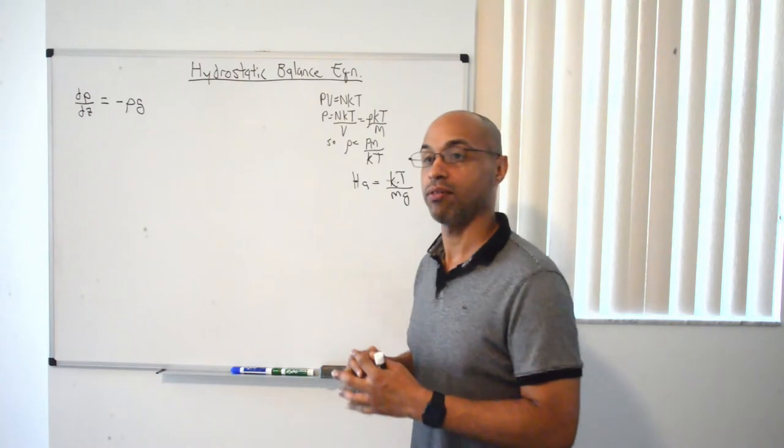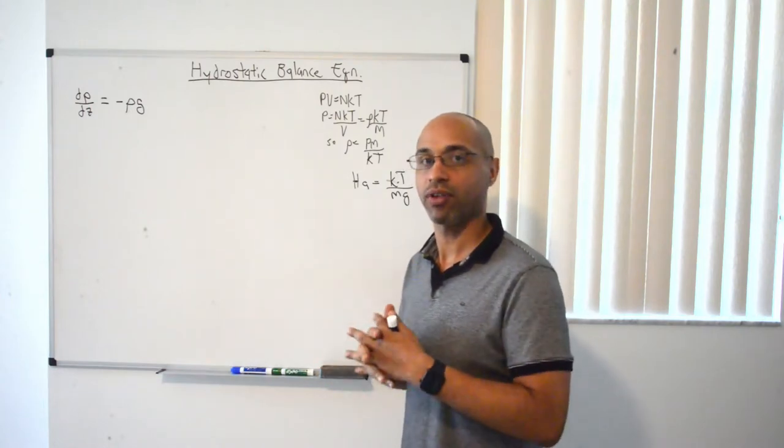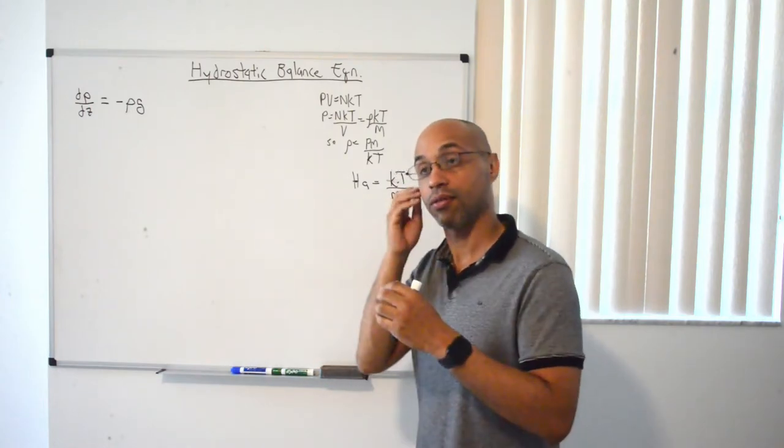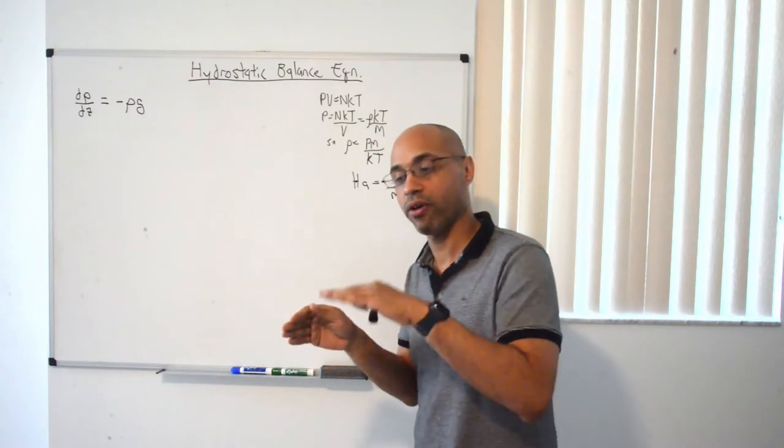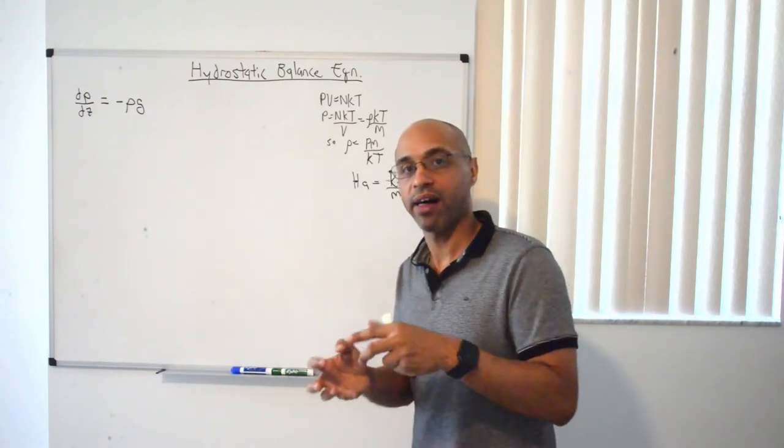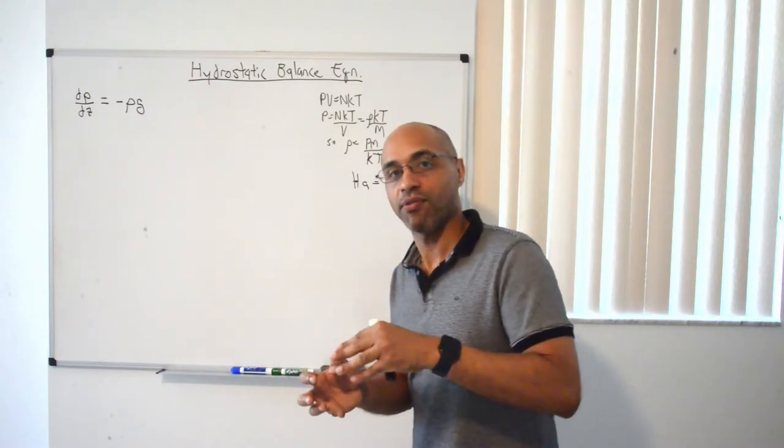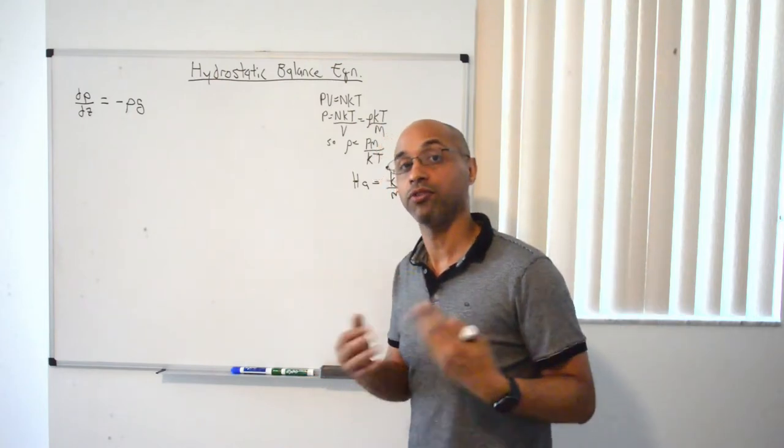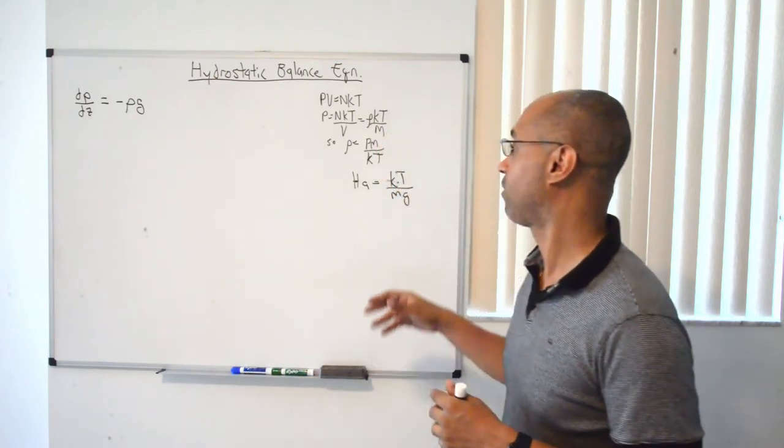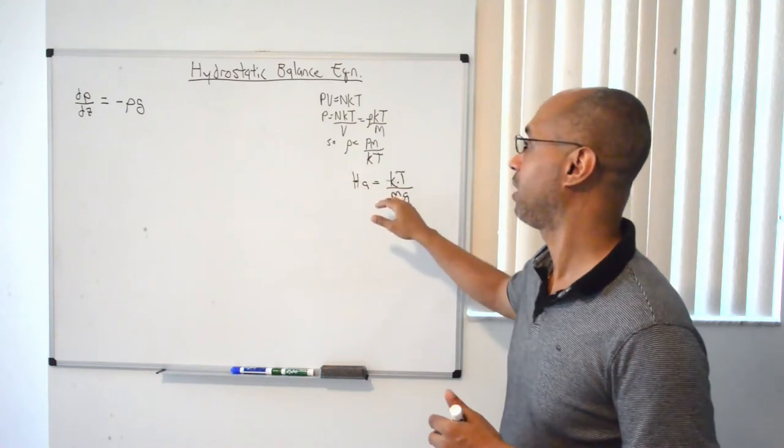And what we're going to do in this lecture is use that to calculate the pressure scale height equation. As you'll see in a bit, the pressure decreases from some high value at the surface, and the atmospheric pressure decreases exponentially. We'll show that in an equation while also deriving a quantity called the scale height, which is shown here.